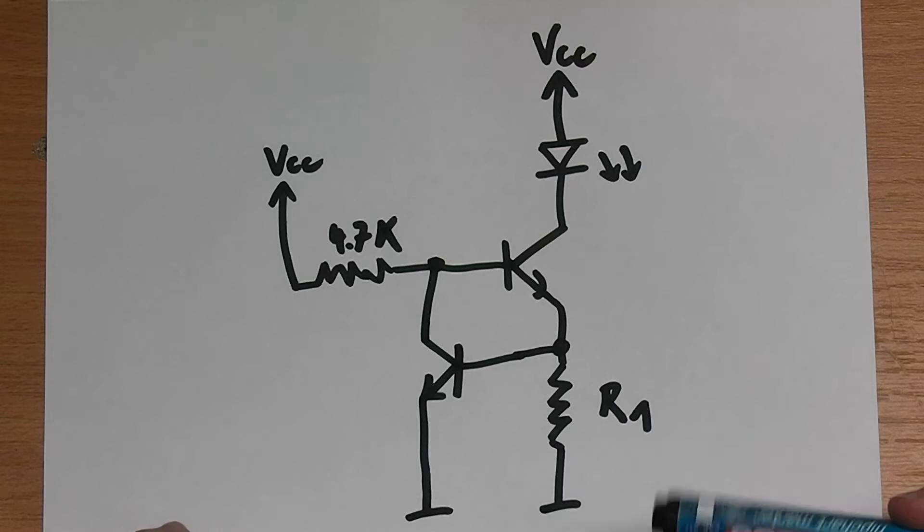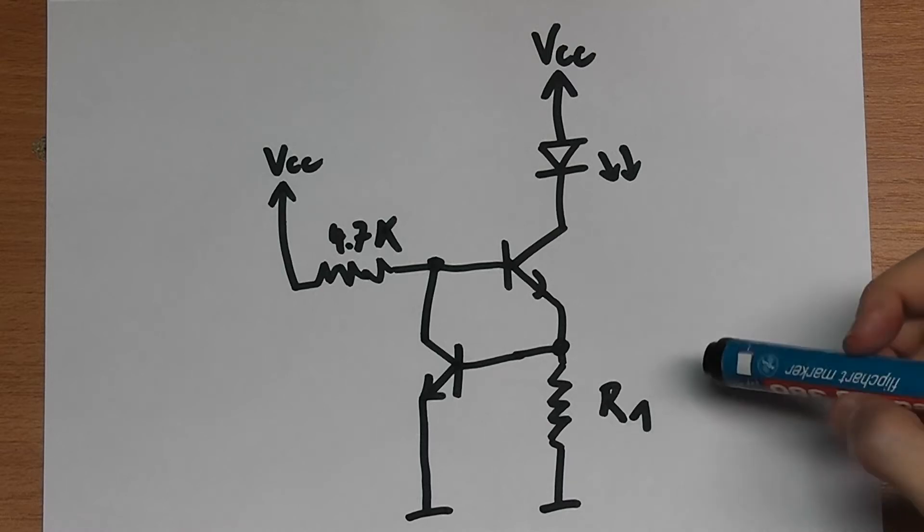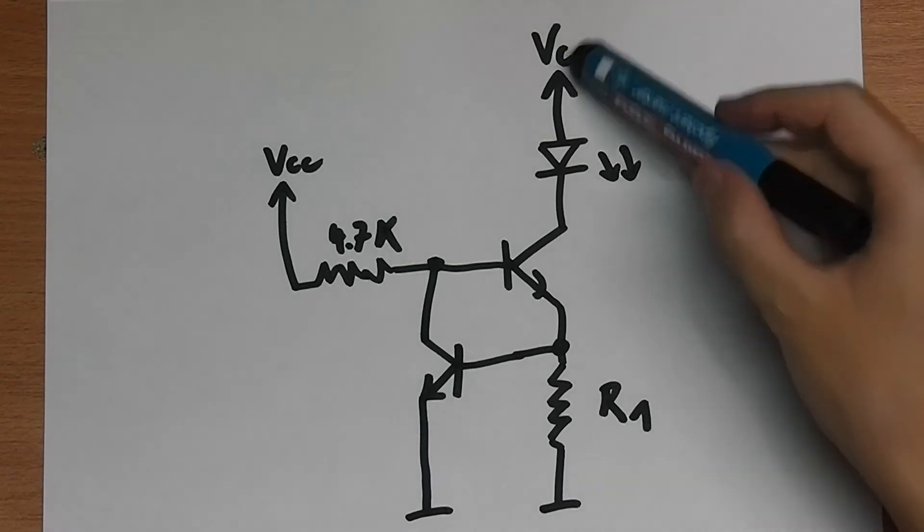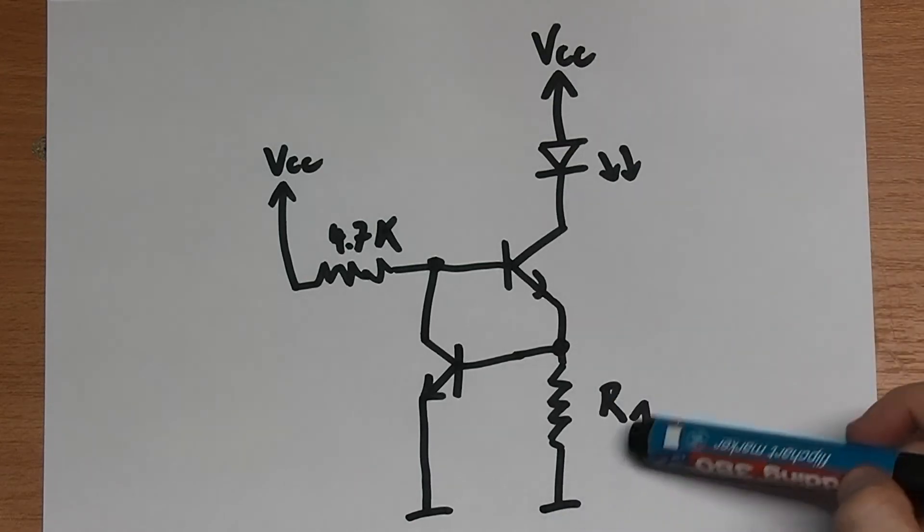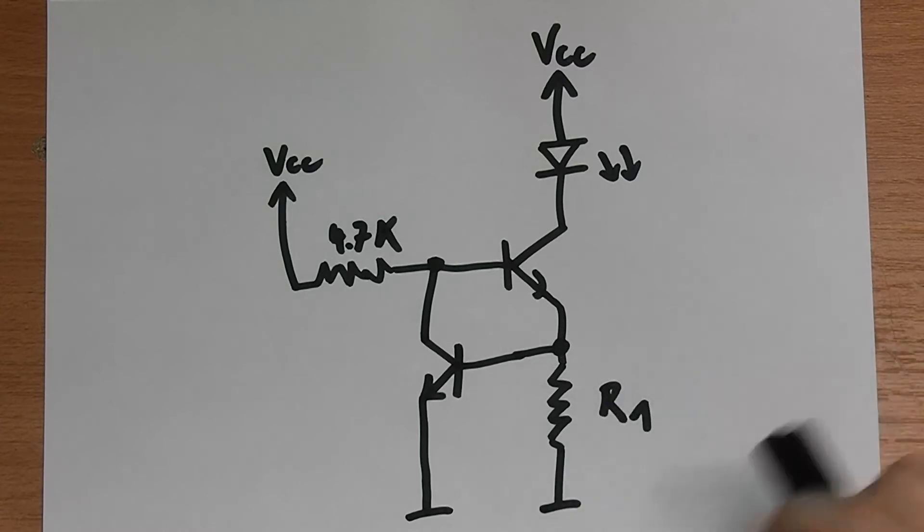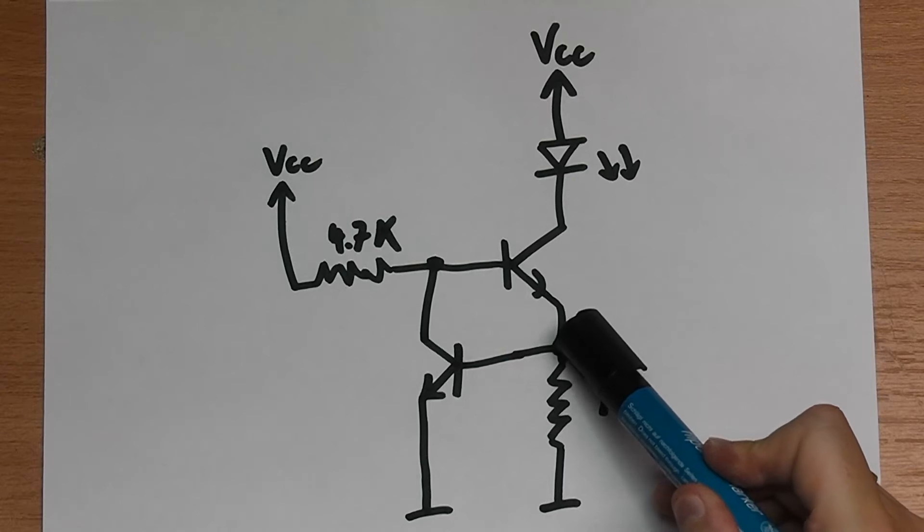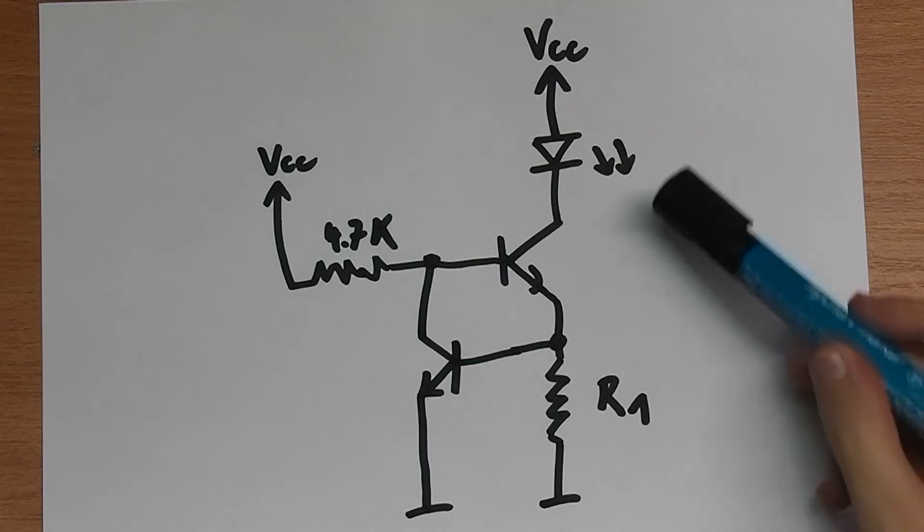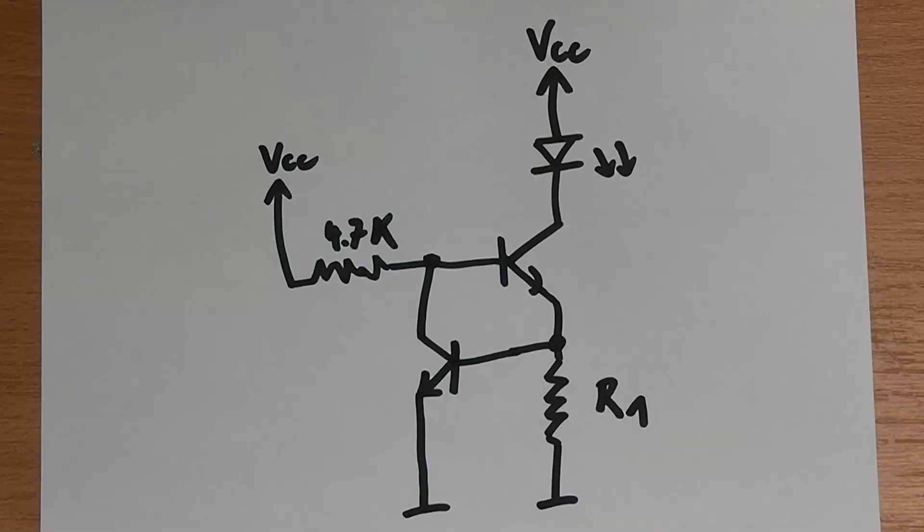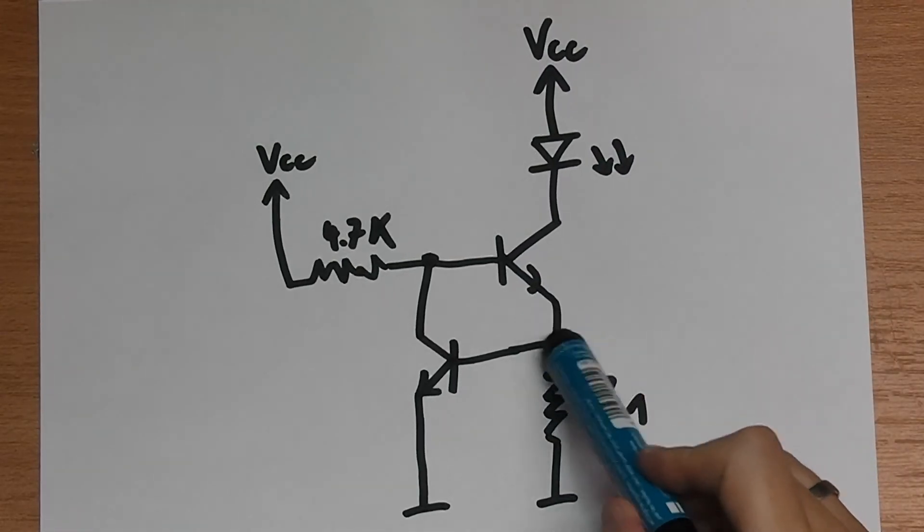Now what this does is the voltage that is dropped across R1 is completely linear with the current that flows down this path. So the more current flows here, the more voltage drops across R1. You will see that the first node of R1 is ground, so zero volts. Therefore the voltage which drops across here or the voltage at this node is actually rising linearly with the current that is flowing down this path. So what happens here is the more current flows here, the higher the voltage at this point.